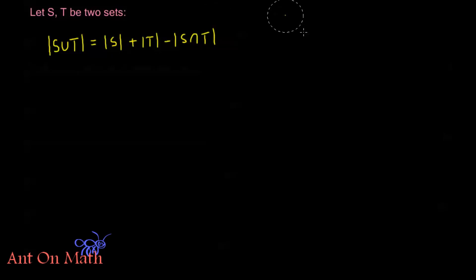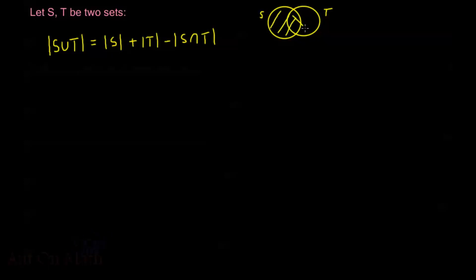This can easily be seen by a Venn diagram. If this is my S and this is my T, and I want to count how many sample points are in the union — that's counting all the sample points in this entire shape — but if I count S first and then count T, I've counted the overlapping area twice. That area is just S intersection T, so I need to subtract one copy of S intersection T. That's exactly what this formula does.